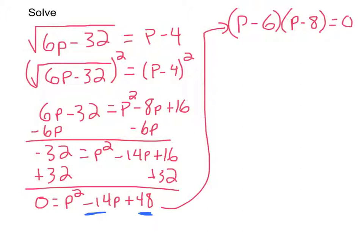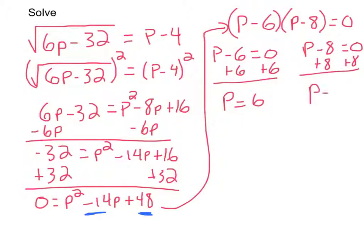I move my 0 to the other side, but it doesn't change its value at all. So now I set up my two equations. p minus 6 is equal to 0. p minus 8 is equal to 0. Okay, I add 6 to both sides. p is equal to 6. I add 8 to both sides. p is equal to 8.